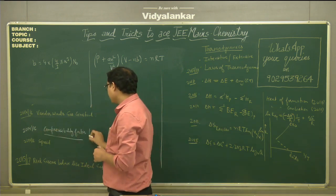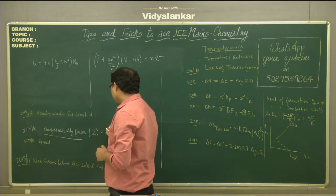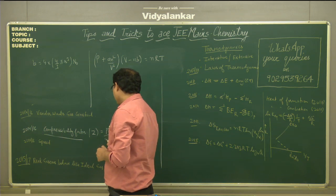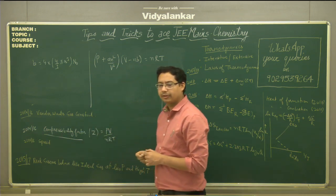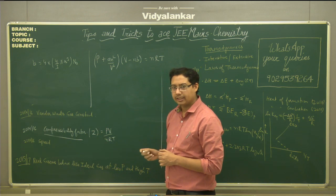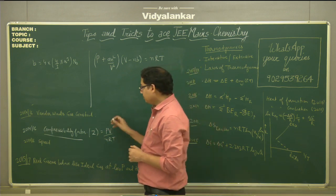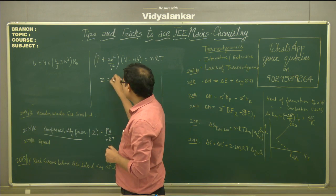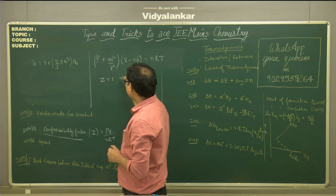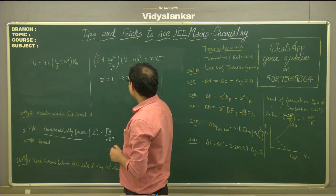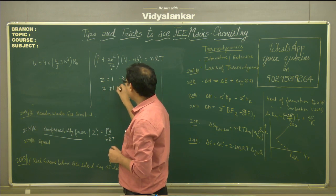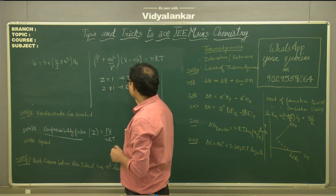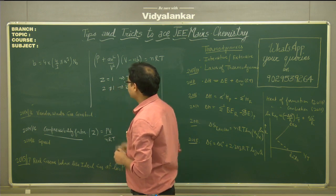Then there is the compressibility factor Z, which is the ratio of PV to nRT. This ratio gives an idea about whether the given gas is a real gas or an ideal gas. If Z equals 1, that indicates the gas is an ideal gas. If Z is not equal to 1, that implies it is a real gas.